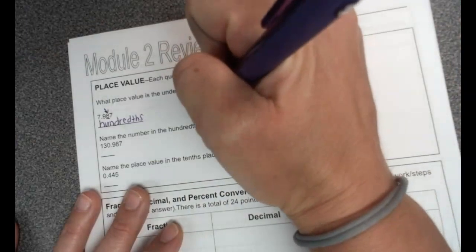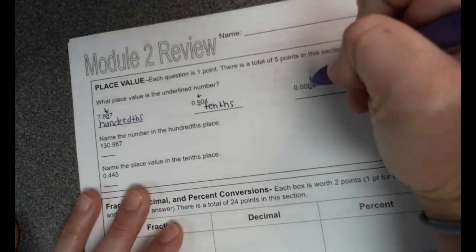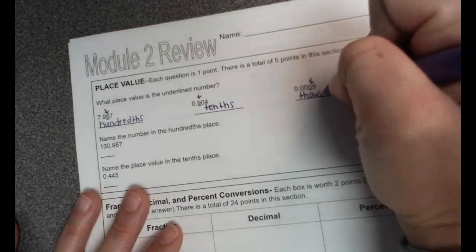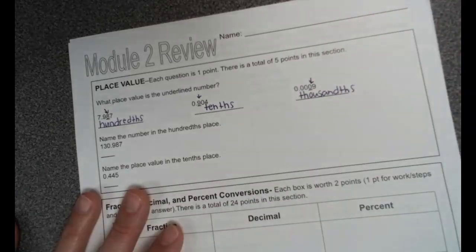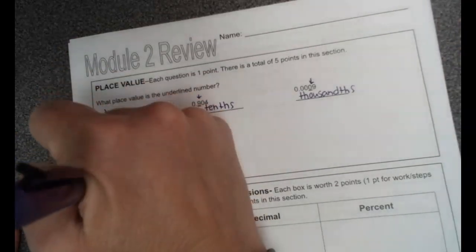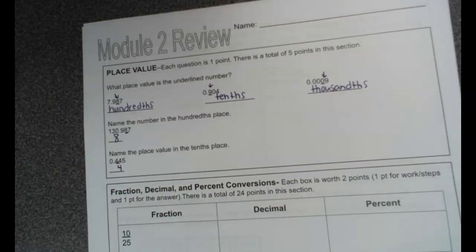Next, it's the nine that's the tenths place. This zero is in the thousandths place. And this one, name the number in the hundredths place. The eight is in the hundredth place. This one says tenth, and that is the four. So that's what your first five questions will look like on your test.